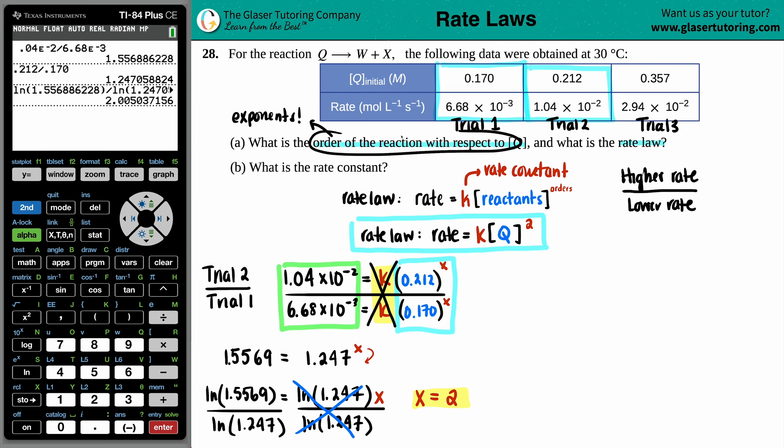And now it says, what is the order of the reaction with respect to Q? The order with respect to Q, this is a fancy way for just saying, what is Q's order? And we just found that Q's order is number two. So you could say that it's second order. So that's the answer to the second part. And now we're done with A. So now we move on to B.